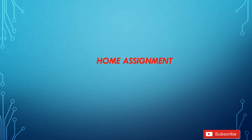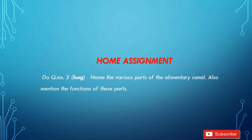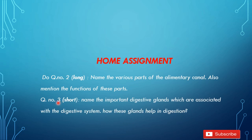It's time for the home assignment. You have to do question number two, which is a long question: name the various parts of the alimentary canal and also mention the function of these parts. You also have to do question number three, which is a short question: name the important digestive glands associated with the digestive system and explain how these glands help in digestion.